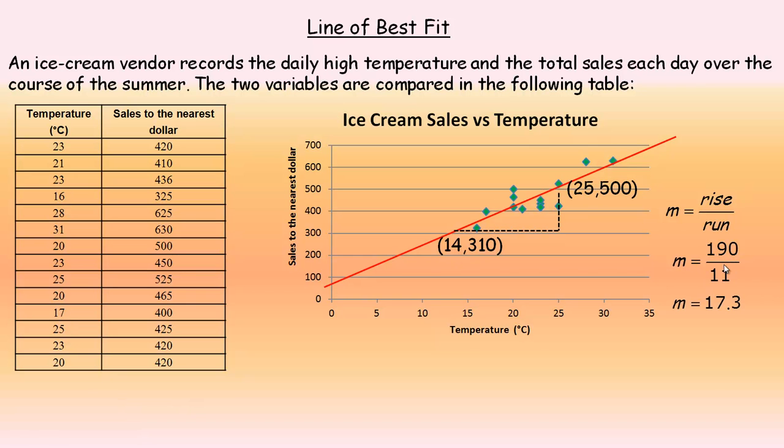We divide 190 by 11, we get 17.3. Now remember, this is dollars and this is degrees, so this is actually 17.3 dollars per degree, which means approximately for every degree the temperature goes up, you're selling about $17 worth more of ice cream.